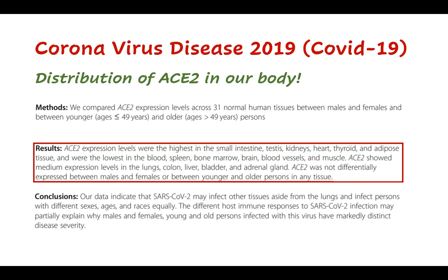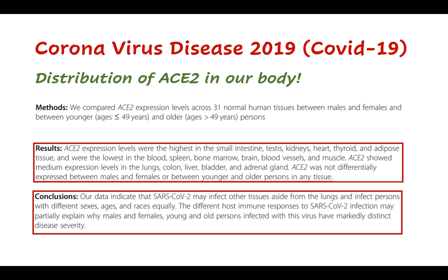ACE2 was not differentially expressed between males and females, or between younger and older persons in any tissue. The conclusion of this study was that SARS-CoV-2 may infect tissues aside from the lungs and may infect persons of different sexes, ages, and races equally. The different host immune response to SARS-CoV-2 infection may partially explain why males and females, and young and old persons, have markedly distinct disease severity.